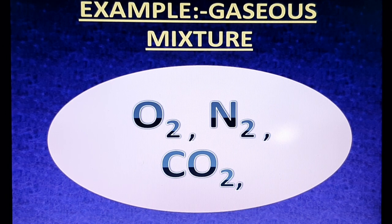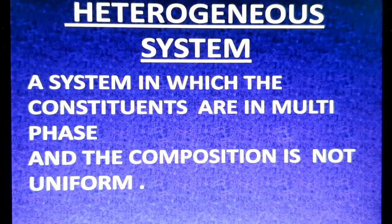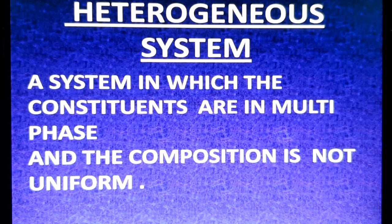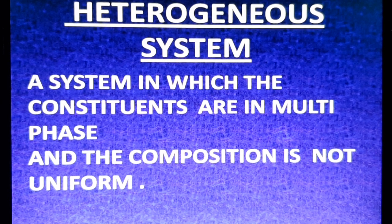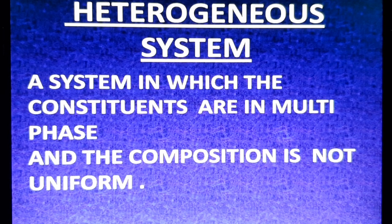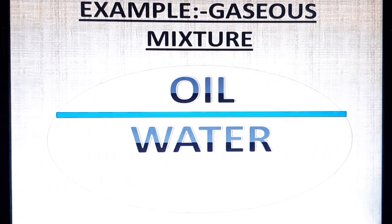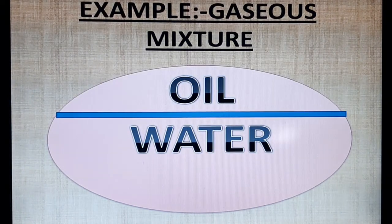The next is heterogeneous system. A heterogeneous system is one where the composition is different throughout, with layer formation occurring. For example, water plus oil.